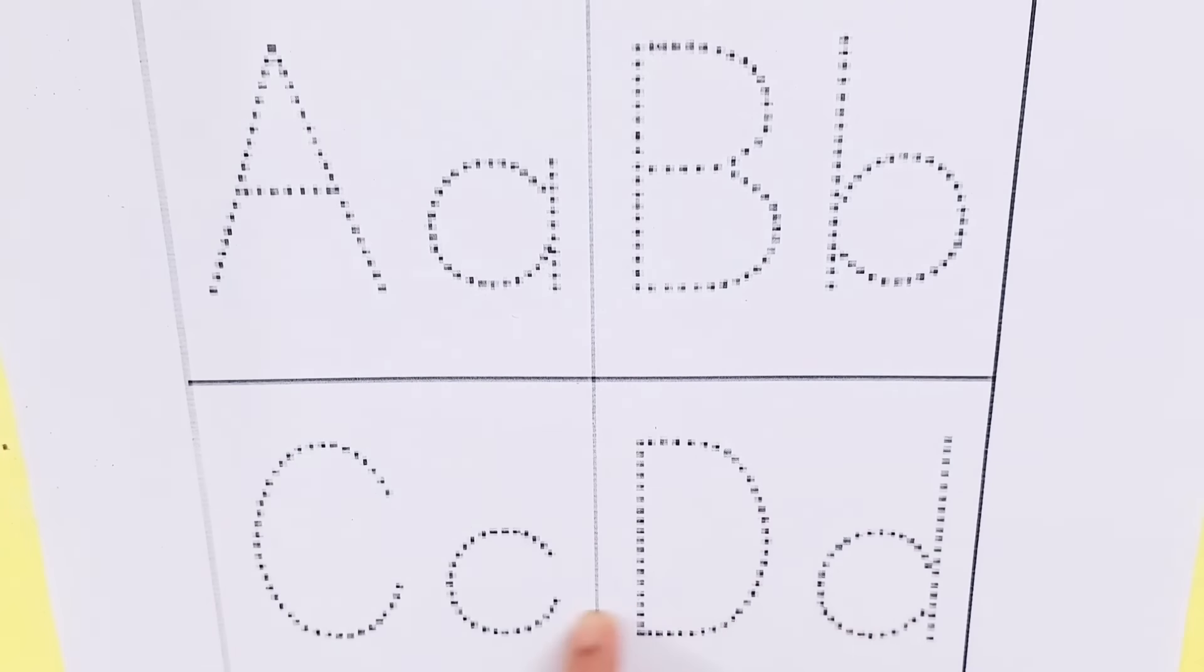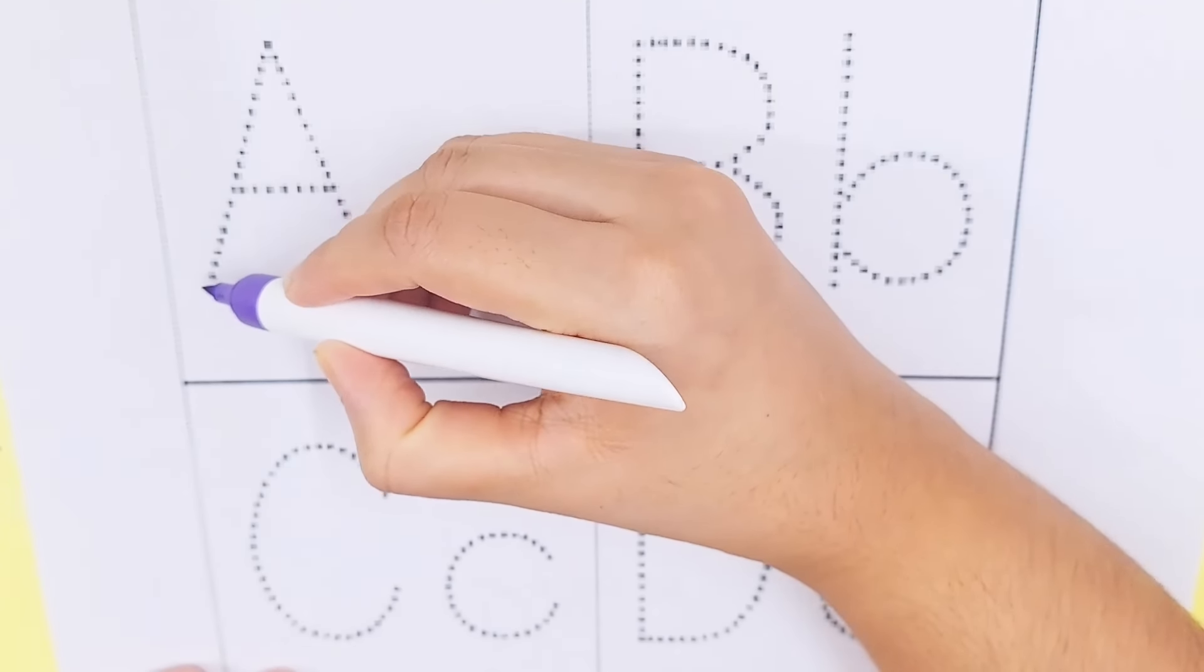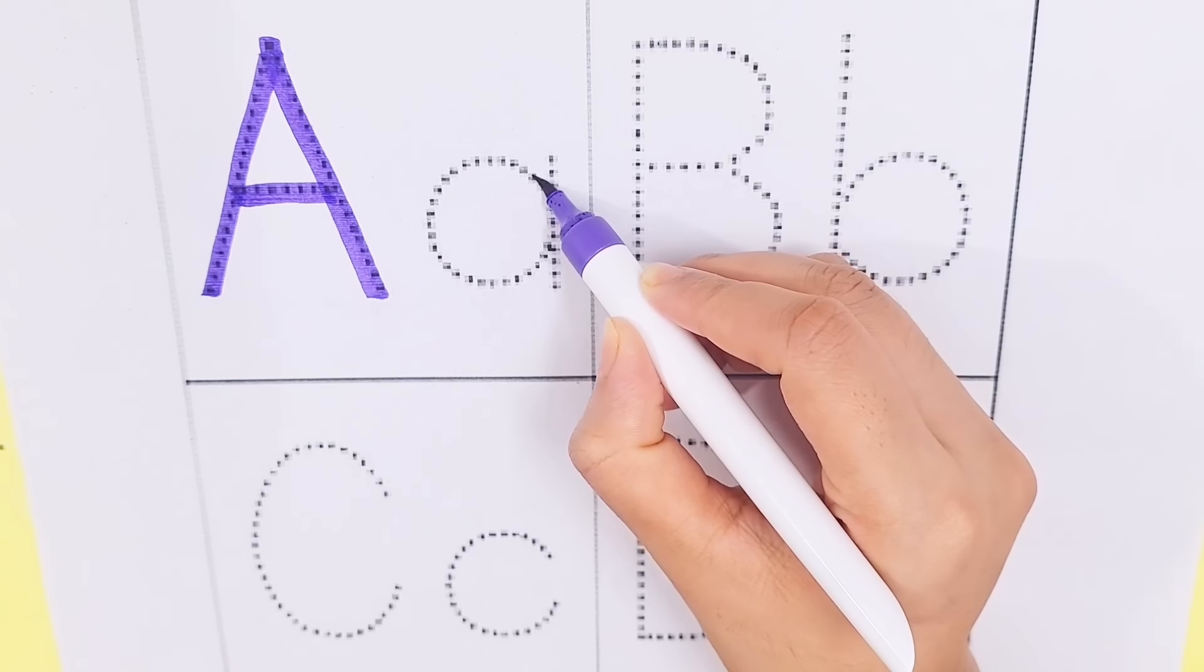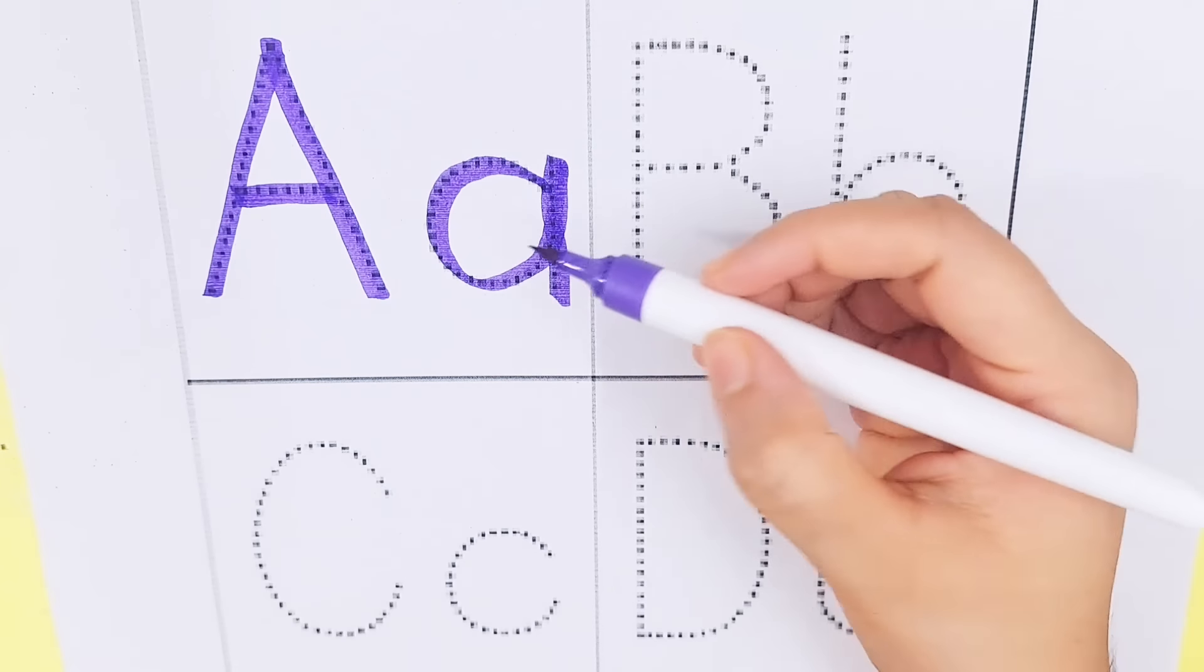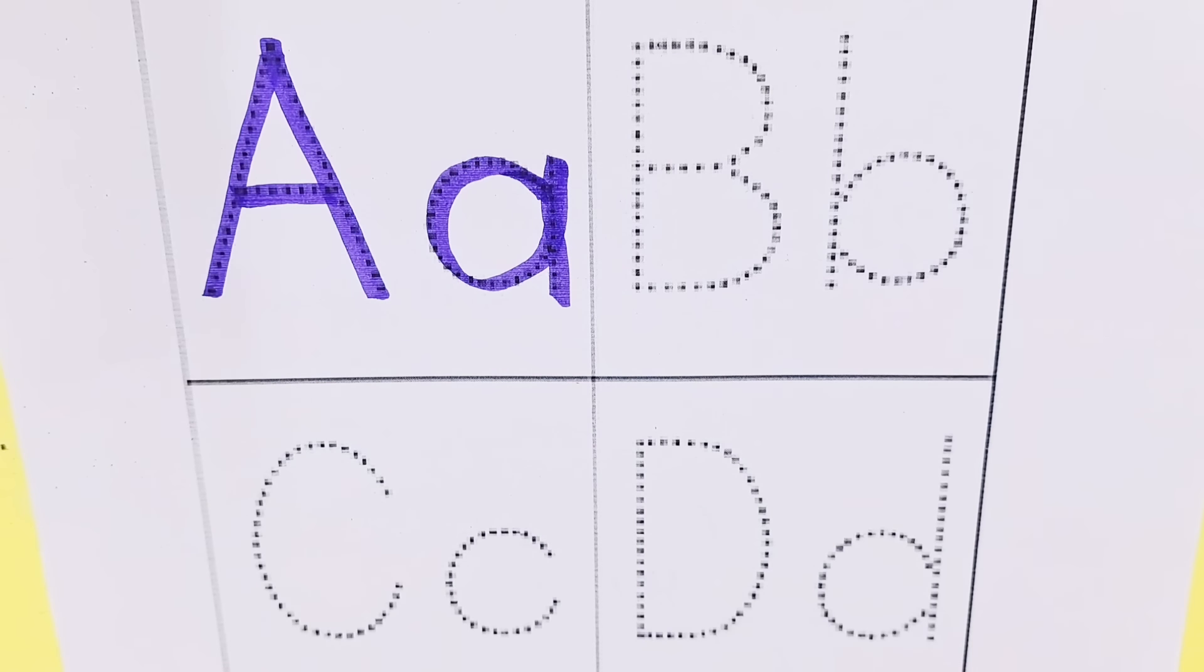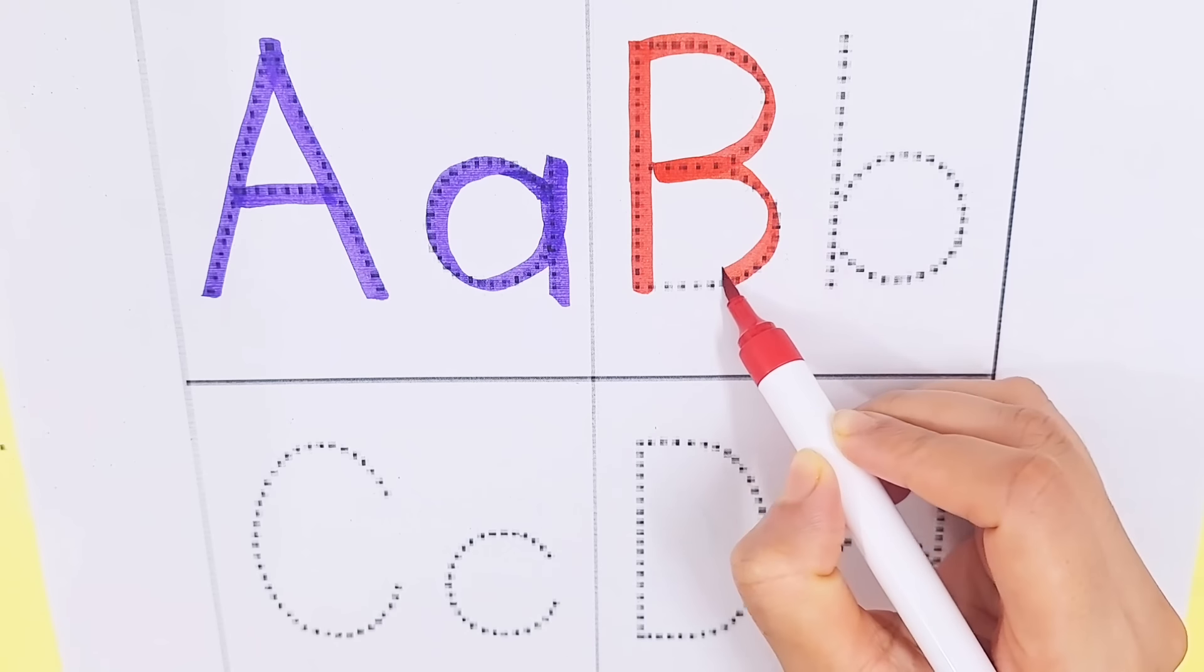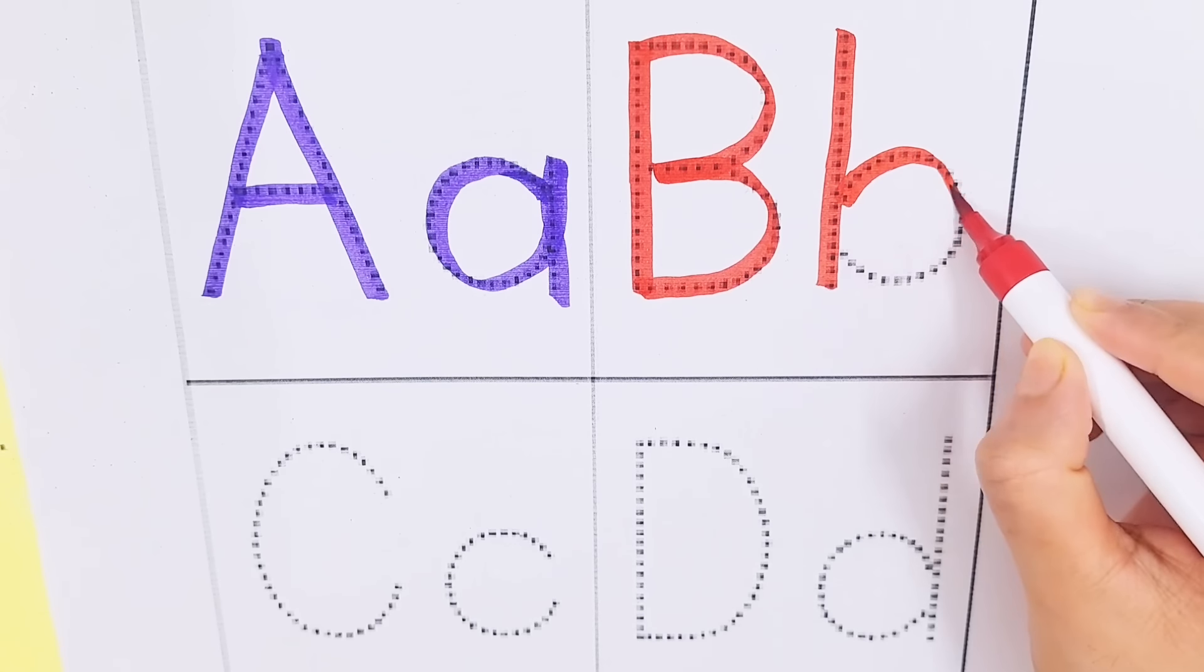Today we are trying to learn some alphabets, capital letter, small letter, violet color. A, A for avocado, A, A for aeroplane. Red color. B, B, B for broccoli, B, B for banana.